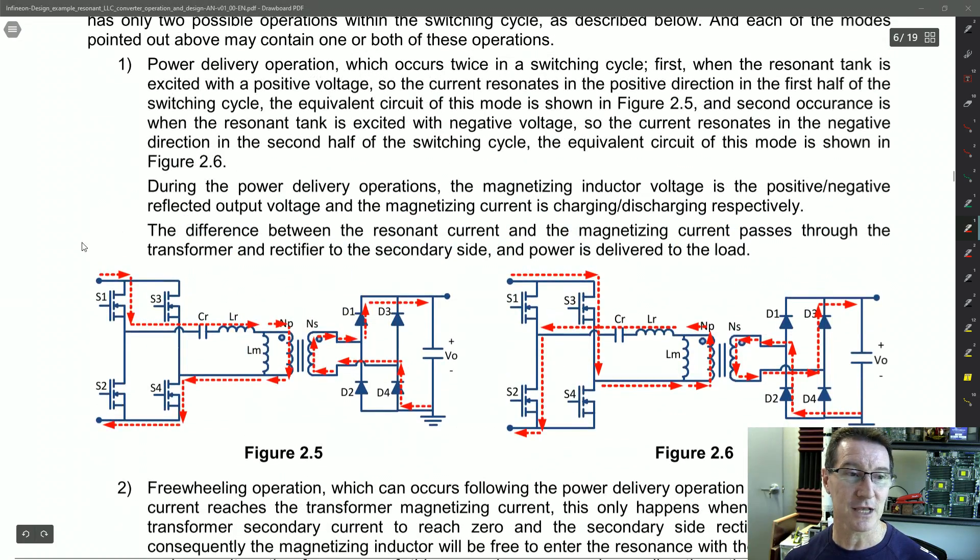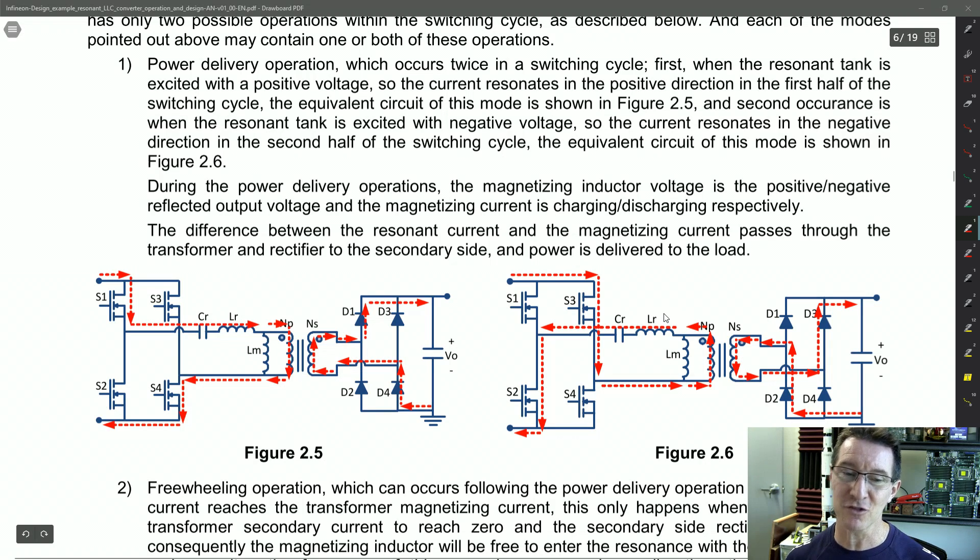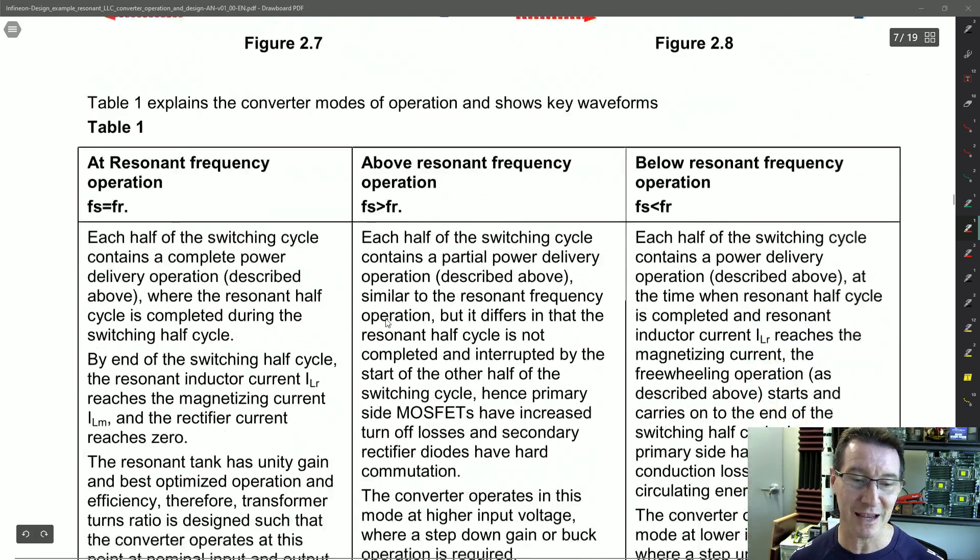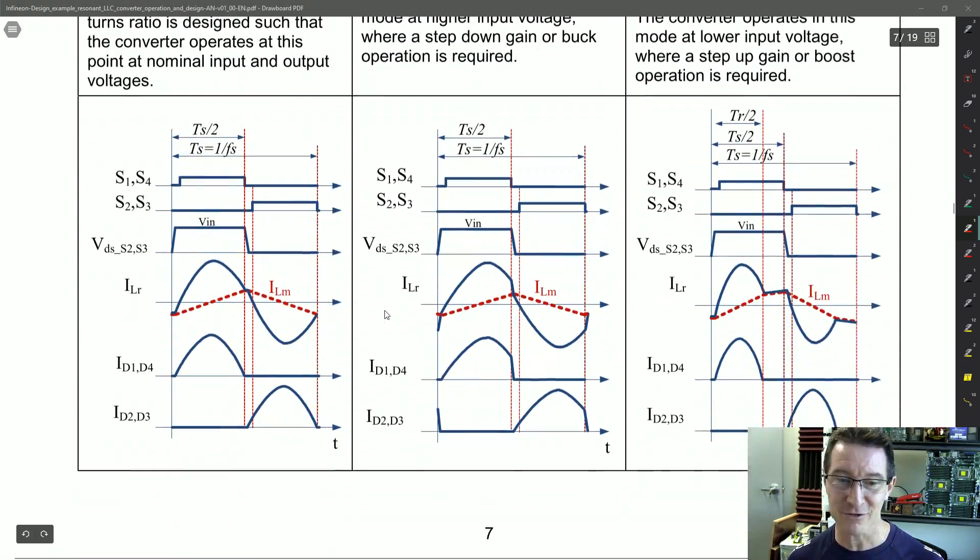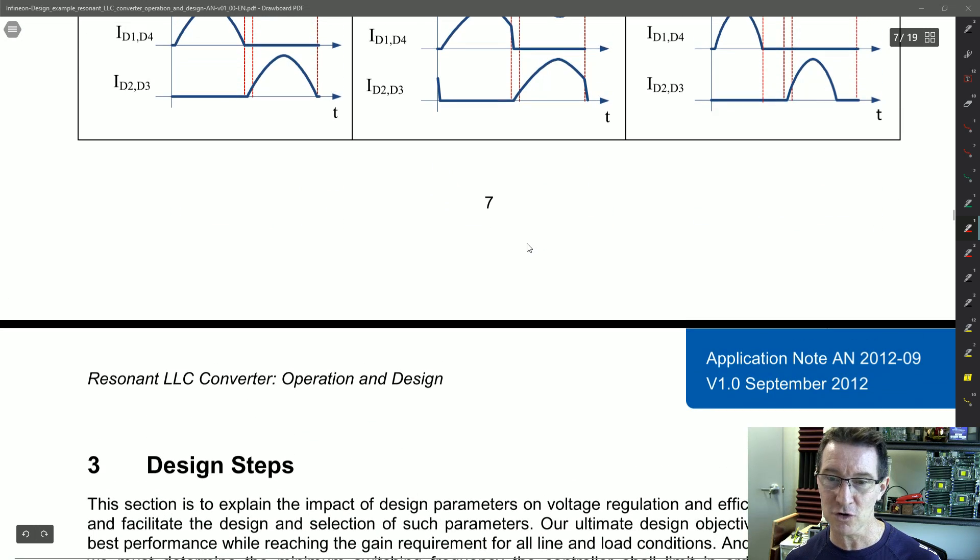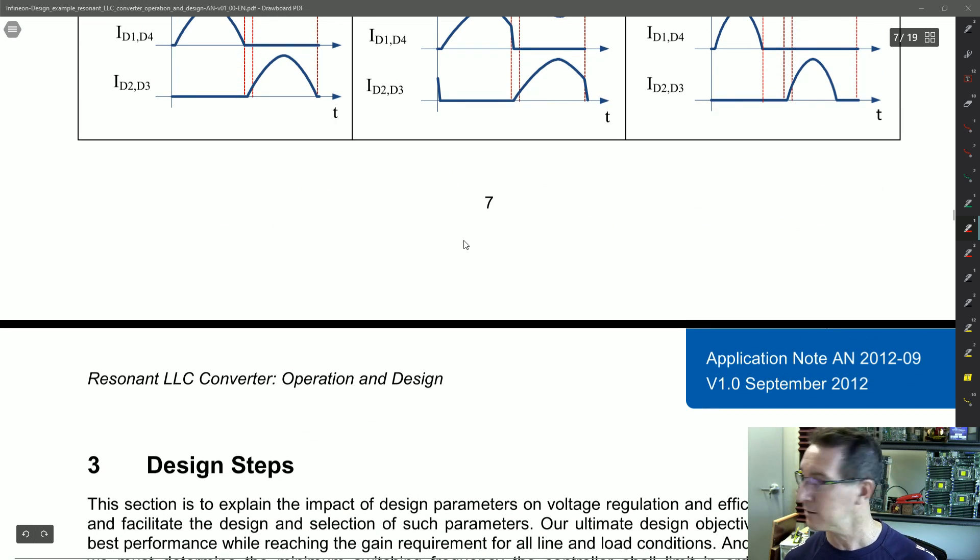Whereas with a resonant mode converter like this, it actually changes the wave shape, the switching wave shape, so that there's effectively less losses. I'll try to DaveCAD it. And you can see the various switching waveforms. So if you want to go through step by step how it works, this application note is pretty good. And it just goes through and it explains each cycle, et cetera. And it shows some of the waveforms too. But let me try and explain something here.